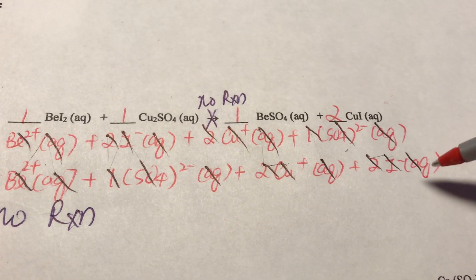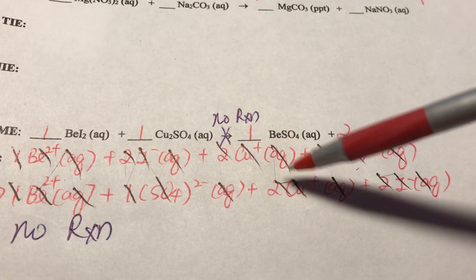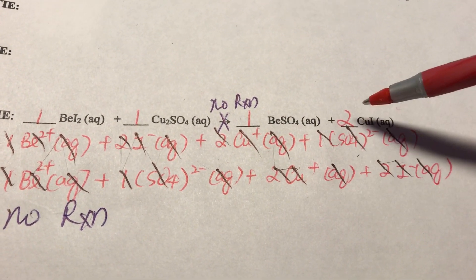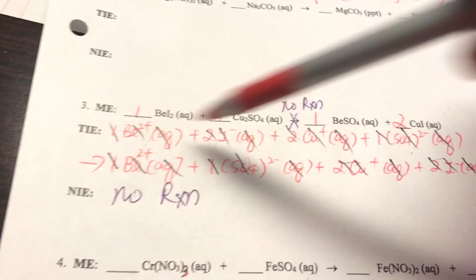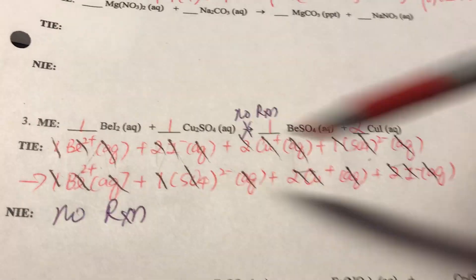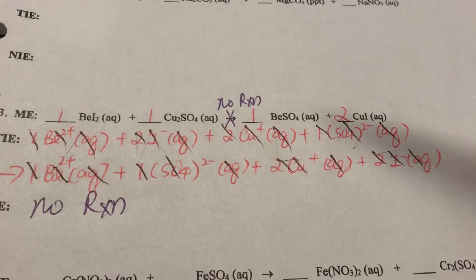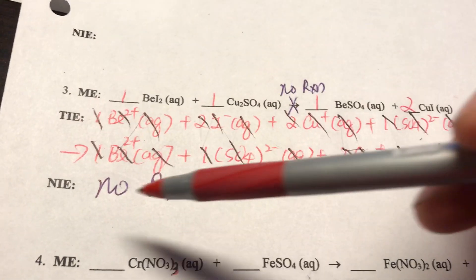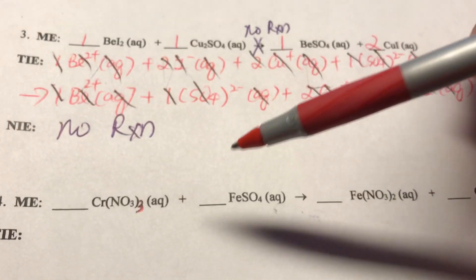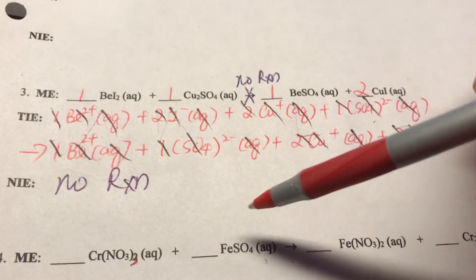So my total ionic equation - before we cancel, we want to tell what happened in the beaker. But after I cancel everything, I find out my net ionic equation, like what happened in my precipitation, is actually turns out no reaction because everything was cancelled here.